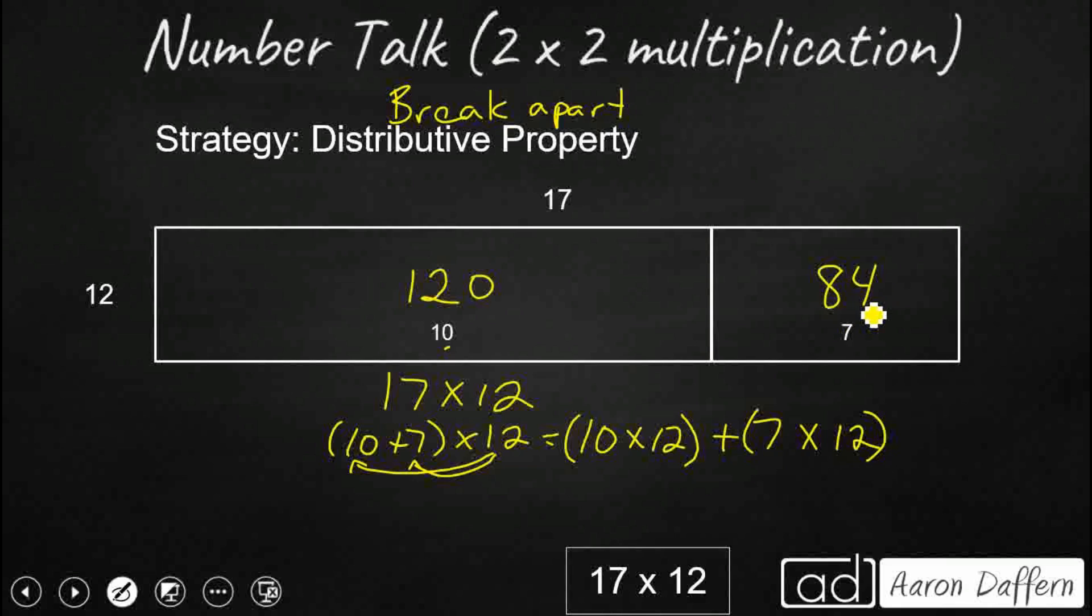So what we need to do is we need to take our 120 and our 84, and you notice we're going to have to do a little bit of regrouping, but hopefully you came up with this answer, 204.